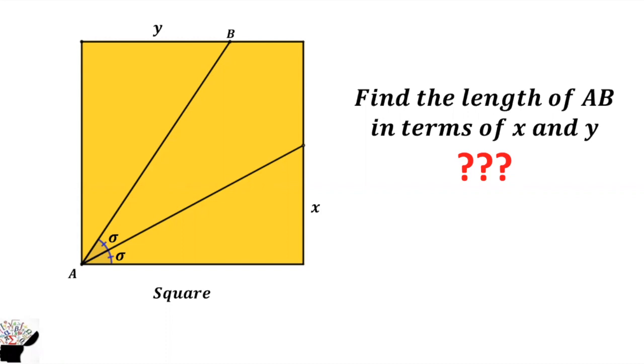We have a square and we are supposed to find the length of AB. The length from this side to B is y, and from this side, this point to the end of the square is x. How can you find the length of AB in terms of x and y?